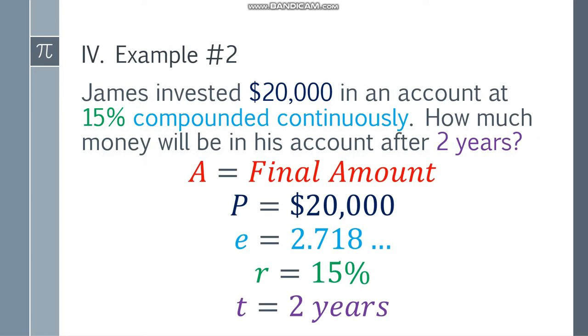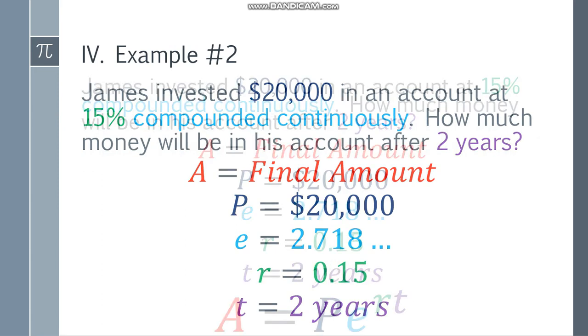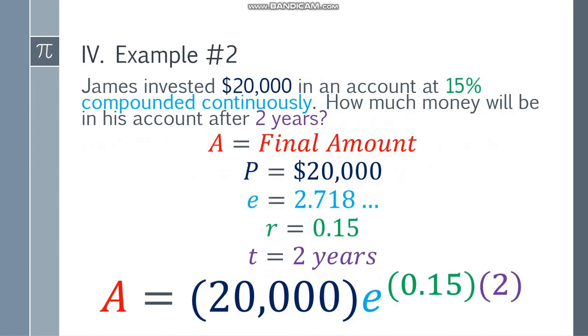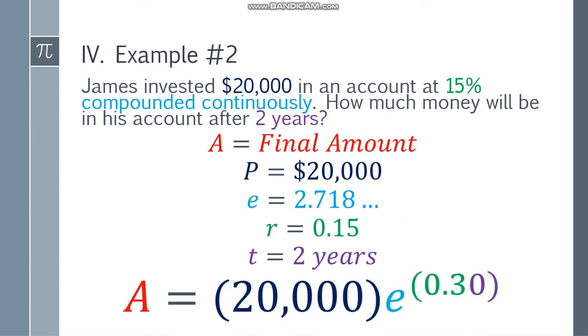You need to change the rate to decimal. That will be 0.15. Use the formula. A equals P times E to the rt. Substitute the values. We have 20,000 times E to the power of 0.15 times 2. So simplify the exponent first. 0.15 times 2, that will be 0.30 or 0.3.